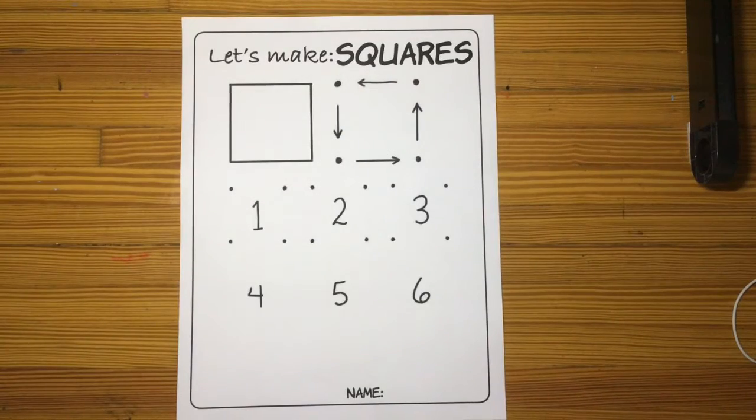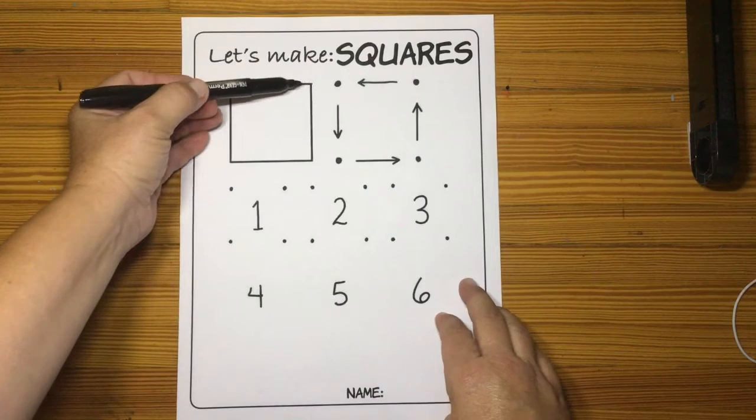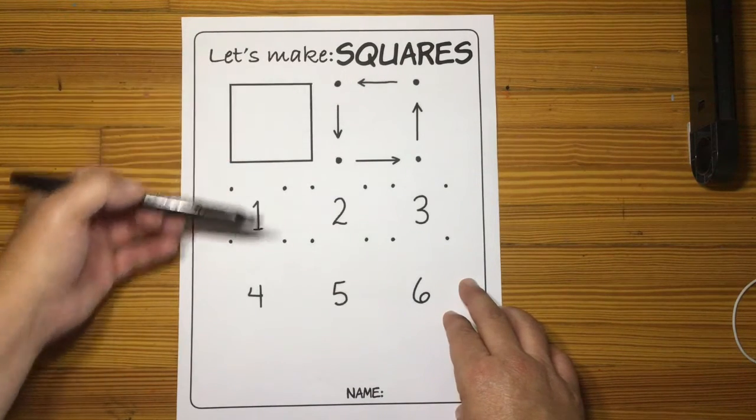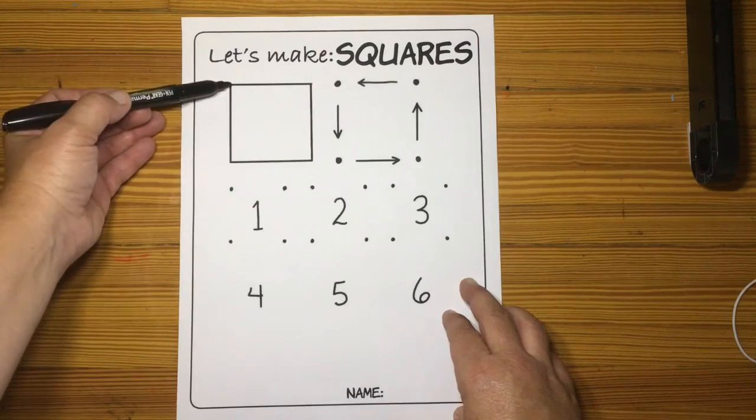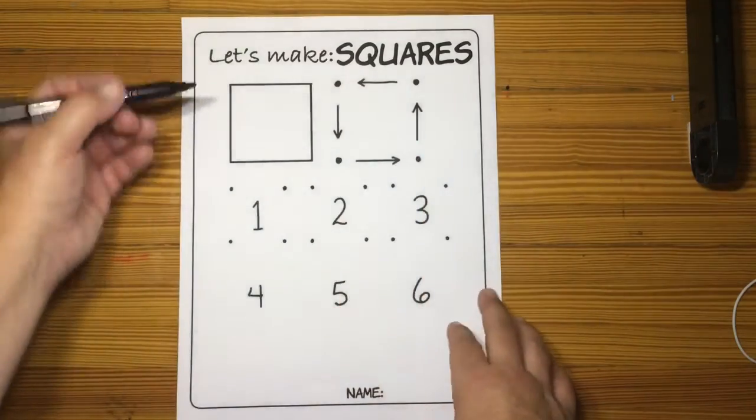Hey boys and girls, we are working on squares today. Now squares have one, two, three, four sides and one, two, three, four edges or points right there.